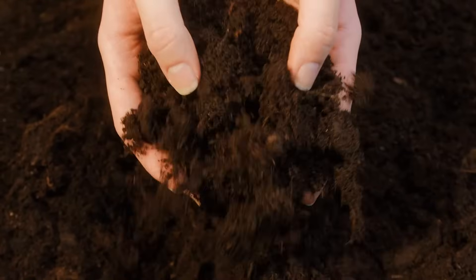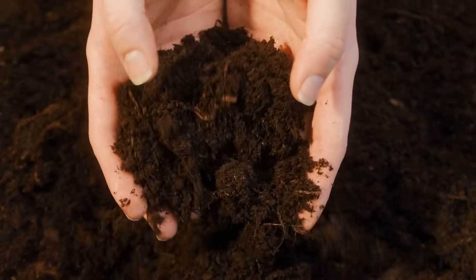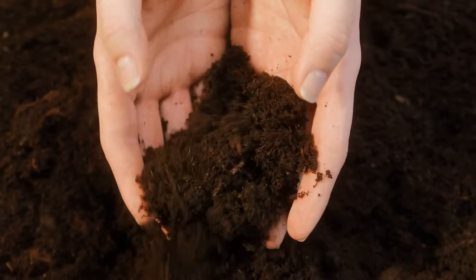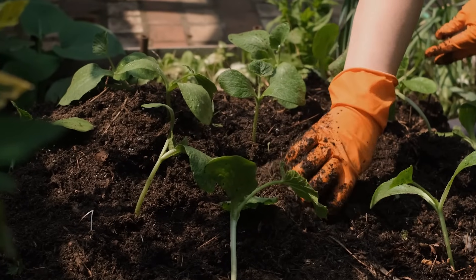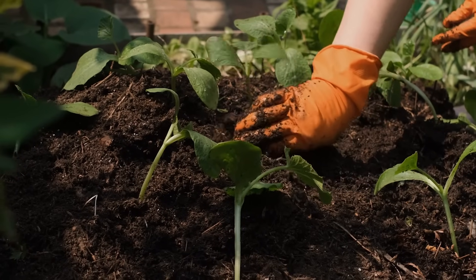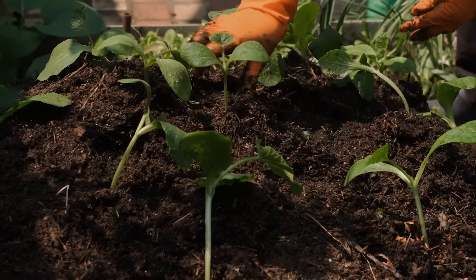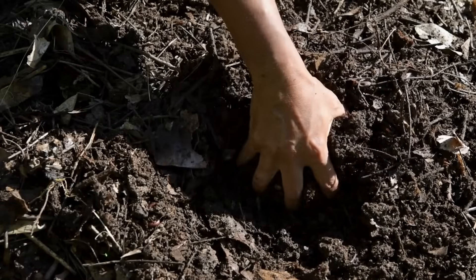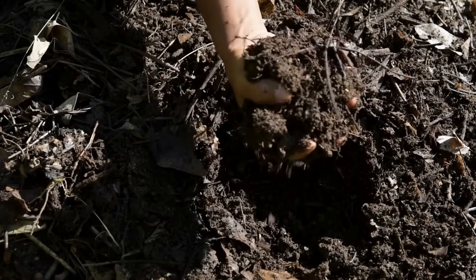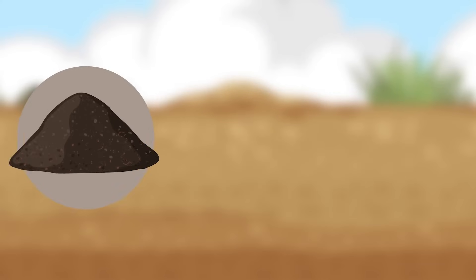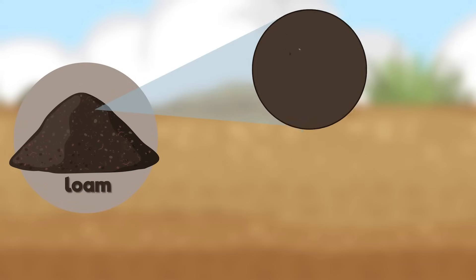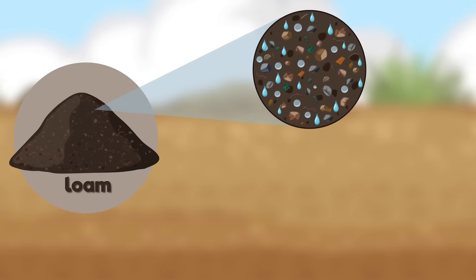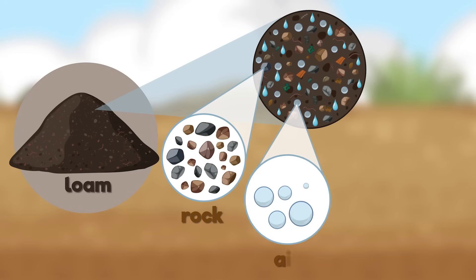Loam is a mix of sand, silt, and also some clay particles. This gives it the best qualities for growing plants. It holds moisture but also drains well, so it's not too wet or too dry. Loam often contains lots of humus, which helps the soil hold onto nutrients and moisture, and it makes the soil very good for growing plants.